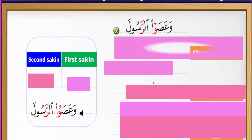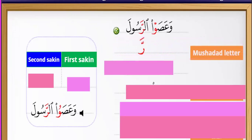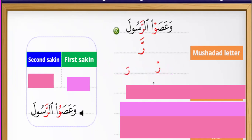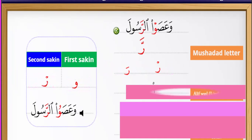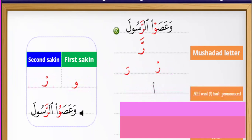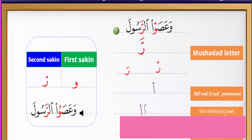Example: 'wa'asaw ur rasul.' The mushaddad letter — the first ra has sukun, the second ra has fatha. Lam shamsiya is not pronounced. It is 'wa'asaw ur rasul.'